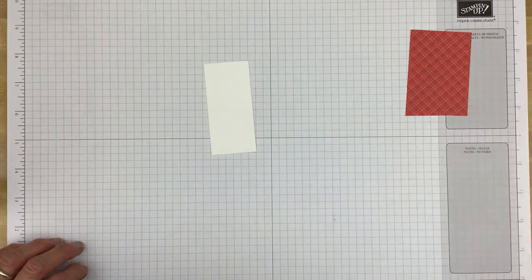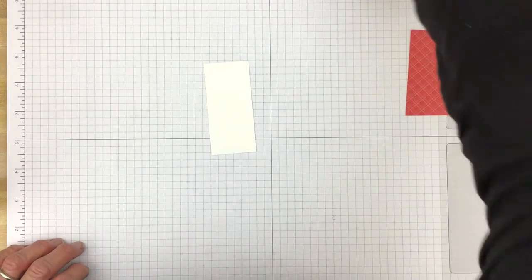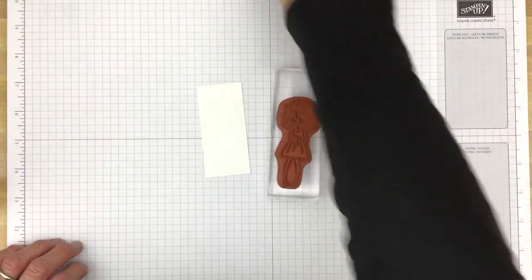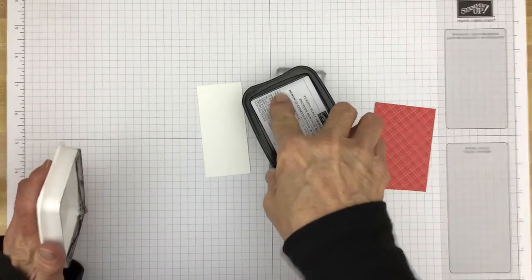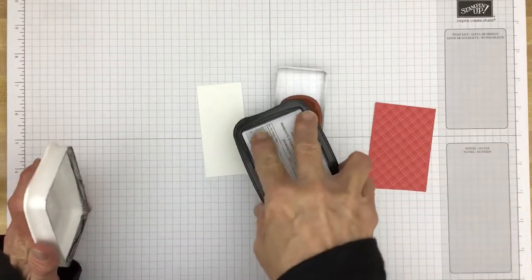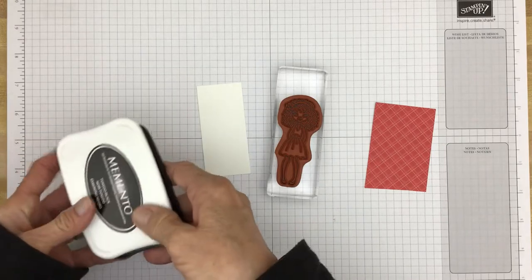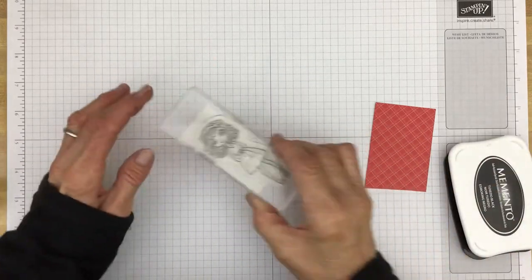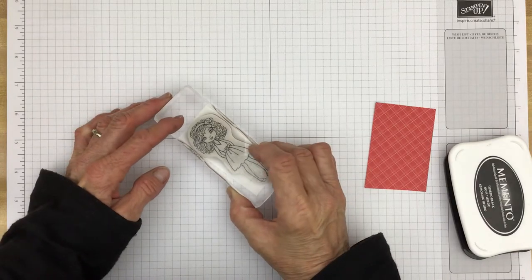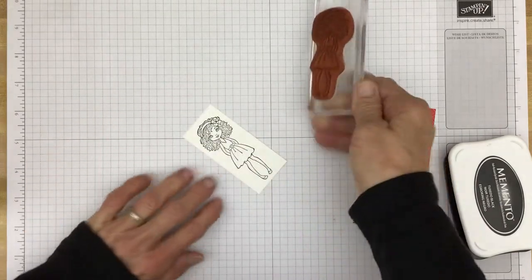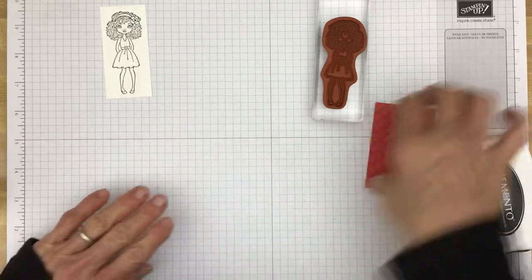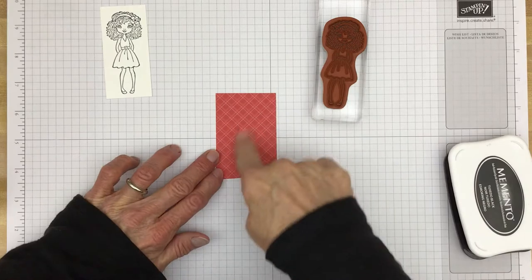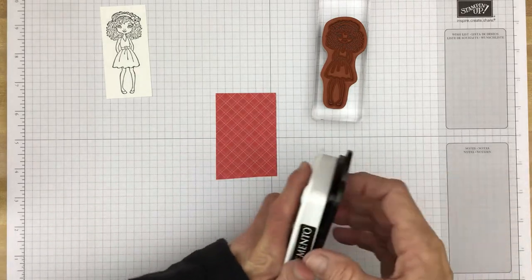We'll put all these pieces aside for right at the moment and we'll do a little stamping. We'll stamp our girl first using memento tuxedo black ink. Ink up the stamp, stamp right here, and now we're going to stamp her again or at least part of her on the designer series paper.